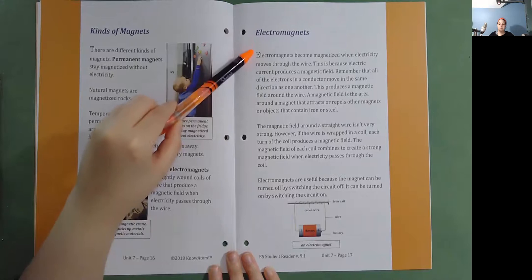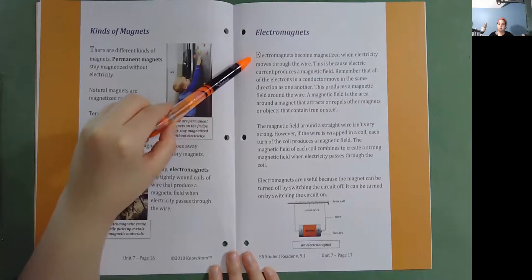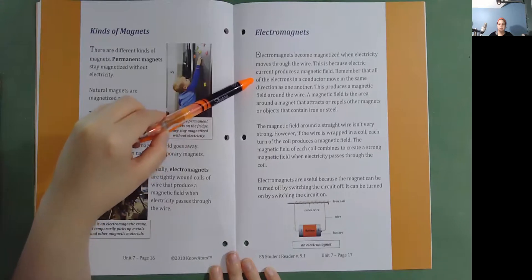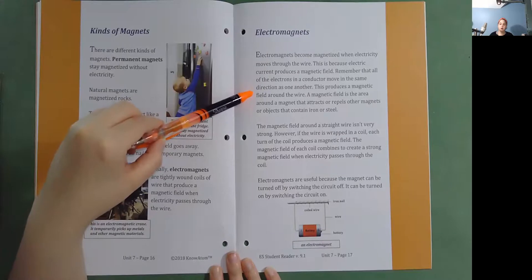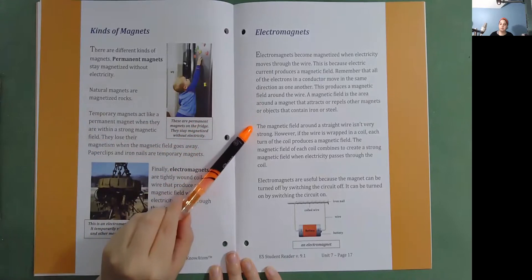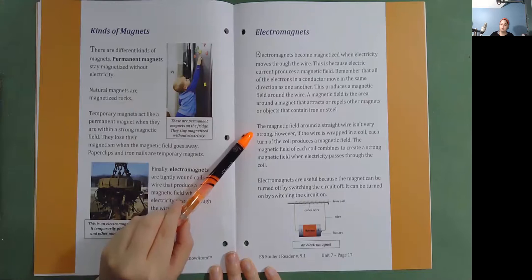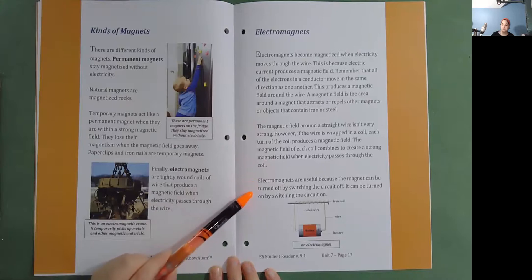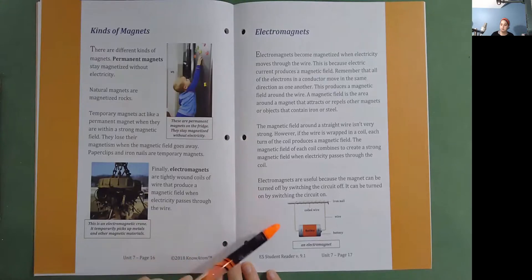Electromagnets. Electromagnets become magnetized when electricity moves through the wire. This is because electric current produces a magnetic field. Remember that all of the electrons in a conductor move in the same direction as one another. This produces a magnetic field around the wire. A magnetic field is the area around a magnet that attracts or repels other magnets or objects that contain iron or steel. The magnetic field around a straight wire isn't very strong. However, if the wire is wrapped in a coil, each turn of the coil produces a magnetic field. The magnetic field of each coil combines to create a strong magnetic field when electricity passes through the coil. Electromagnets are useful because the magnet can be turned off by switching the circuit off. It can be turned on by switching the circuit on. Here's an electromagnet.